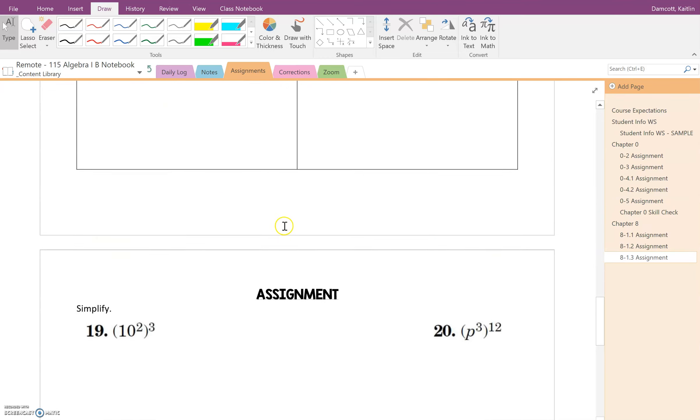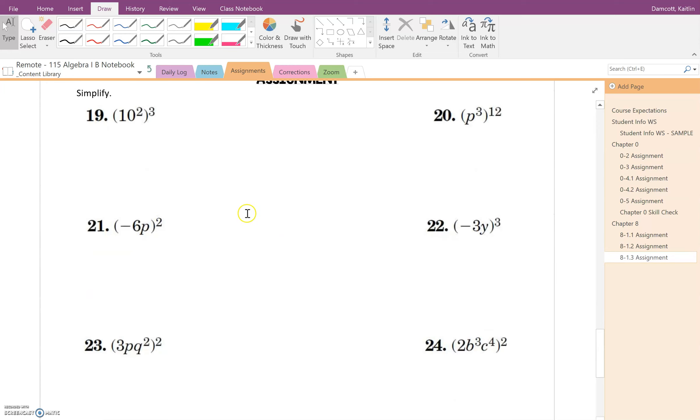Alright, your job, now that you've watched both videos, you are going to attempt these six problems. It appears that when I'm looking at this, number 19 and 20 will be like example 1, and then 21, 22, 23, and 24 will be like example 2. So do your best if you have questions. Don't hesitate to get on Zoom and ask those. Alright, good luck, guys.